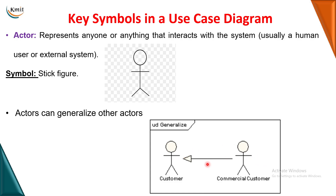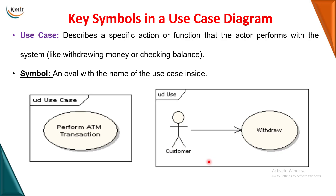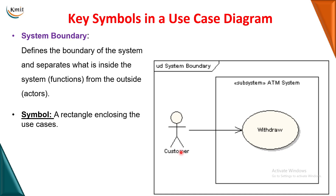The next symbol is use case. A use case is basically the action that is performed by the actor. It is symbolized as an oval; inside this oval you write what action is being performed. For example, if the customer has gone to an ATM center to withdraw the amount, withdrawing the amount is the use case and customer is the actor.